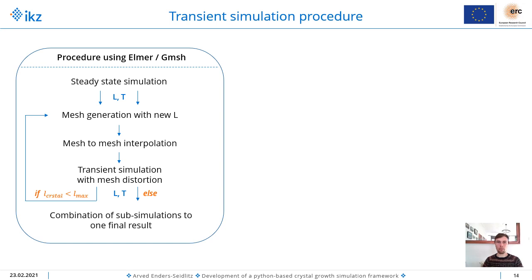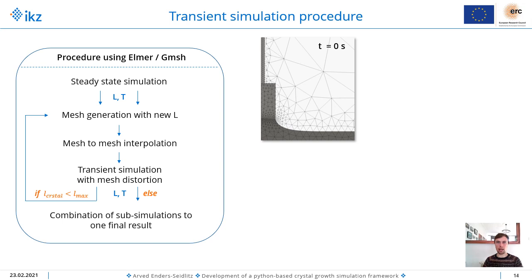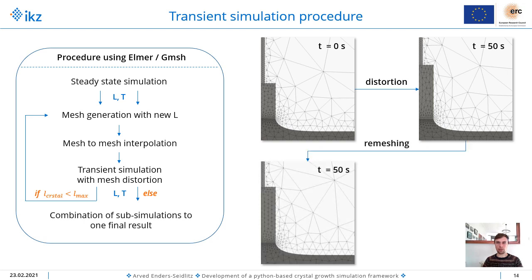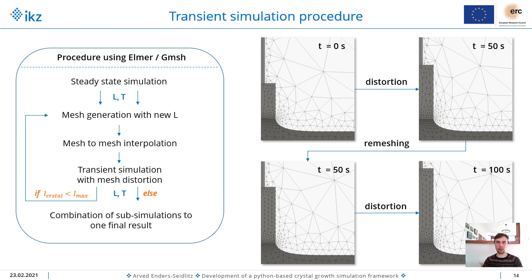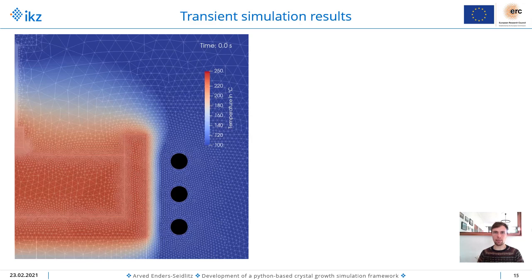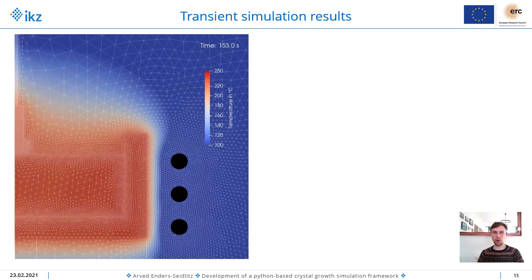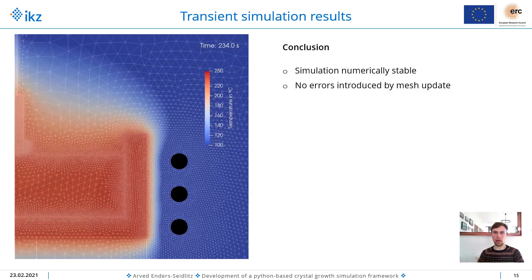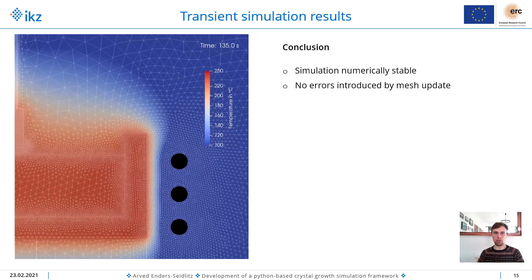After a certain time, a new mesh is generated, again with interpolation, and this goes on until the final length of the crystal is reached. The Python framework takes the output of the Elmer simulation and combines it into a whole result. Here you can see this: the mesh at the initial time is distorted — the triangles are just getting longer — and after a certain time, when the mesh is getting too bad, it is replaced by a new mesh, which is distorted again, and so on. You can see a video of the transient simulation with the crystal on the left-hand side growing and the mesh replaced step by step in between. This simulation is numerically stable and there are no errors introduced by the mesh update, which I consider pretty nice.